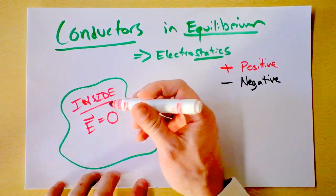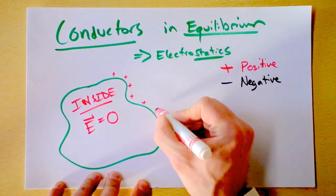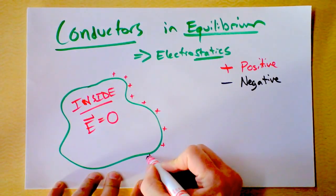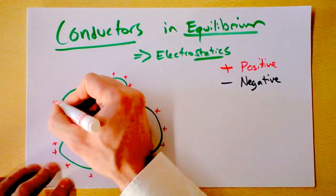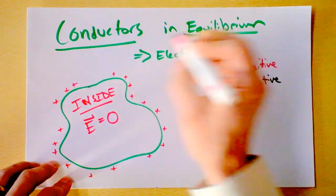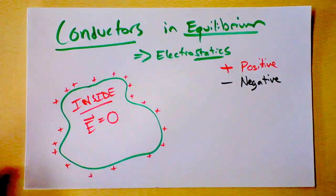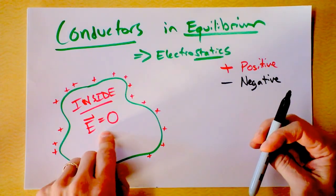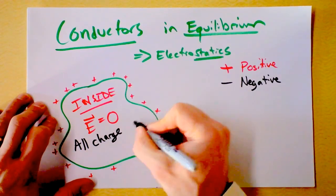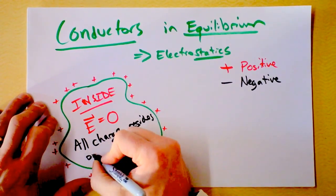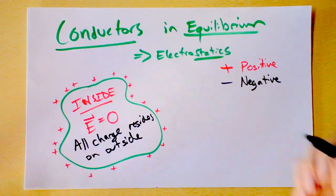That actually leads us to rule number two: all of the excess charge will sit on the outside of the conductor. Inside the conductor, the electric field is zero, and all charge resides on the outside. Those two things are natural results of each other.